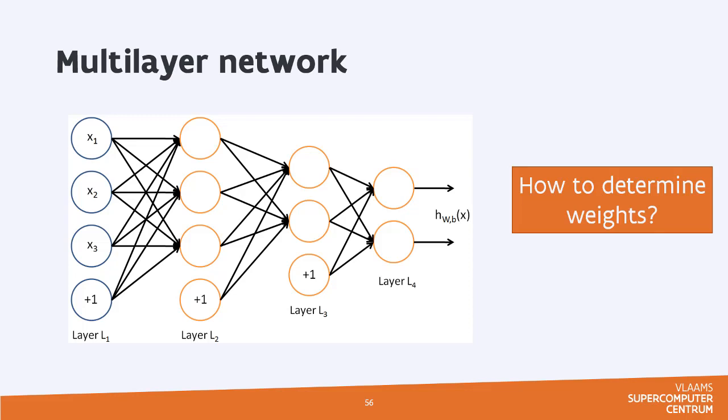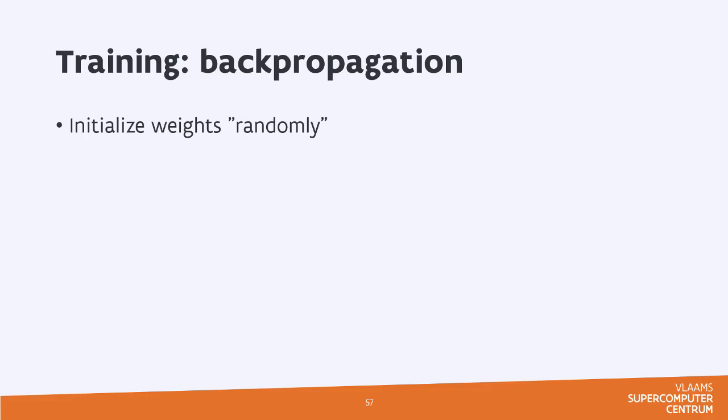The question now, of course, is how do we determine those weights? Because the inputs and the outputs for the training set at least are given. So how can we use those in order to determine the w's, which are to be determined in order for this neural network to do something useful, to reproduce the output from the training input? The algorithm is backpropagation. It's pretty old. It has been developed back in the 90s. And we start by initializing the weights randomly.